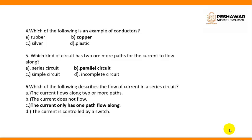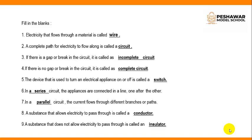Question number 6: Which of the following describes the flow of current in a series circuit? Correct option is C: the current has only one path to flow along.